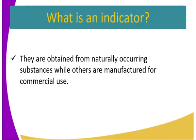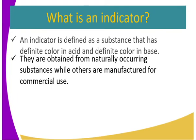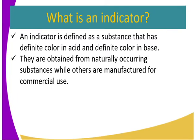So, what is an indicator? This is an important question for us to ask. An indicator has been defined as a substance that has a definite color in acid and a definite color in base.